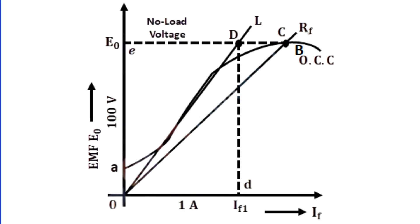The line OL is drawn tangent to the OCC curve. Taking the value of the current axis when the tangent line OL passing through the dotted line of no load EMF, critical resistance is calculated. Critical resistance is the slope of tangent line OL given as RC equal to OD by OE ohms.